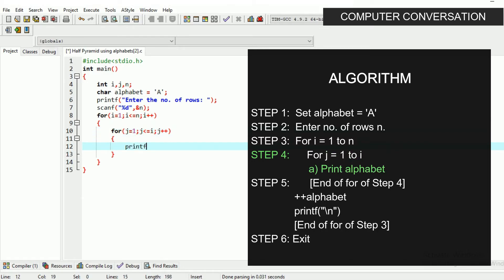Open another brace and write the statement for printing the alphabet value. So write printf %c with one space for clear viewing of the pattern alphabet. So the alphabet value will be printed. And then close the brace for inner loop.